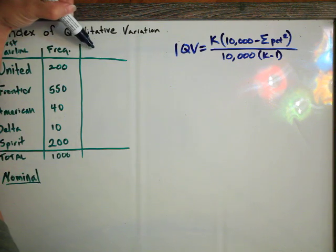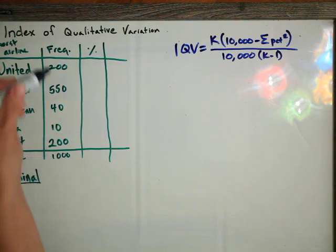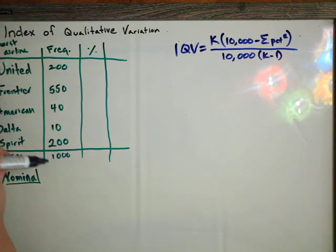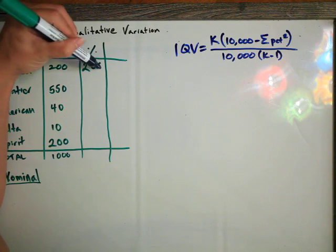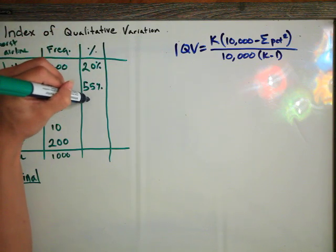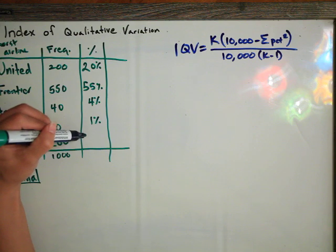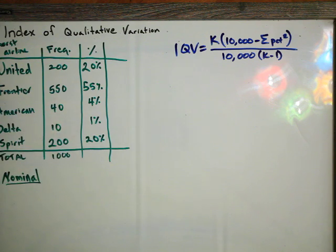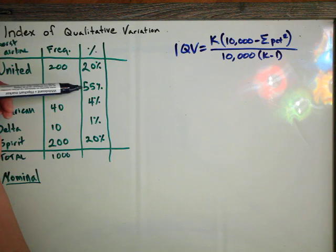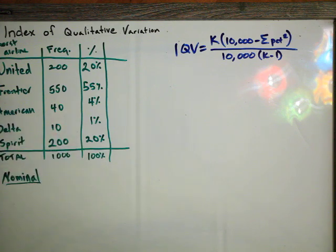The first thing we need to do is make a column for percent. Because we have 1,000 people, finding the percents is going to be very simple. 200 divided by 1,000 is 20%. 550 divided by 1,000 is 55%. 40 divided by 1,000 is 4%. 10 divided by 1,000 is 1%. And 200 divided by 1,000 is 20%. We can check the percent column by adding all the values — they should add up to 100. 20 plus 55 is 75, plus 4 is 79, plus 1 is 80, plus 20 is 100. So the total is 100%, just like it should be.